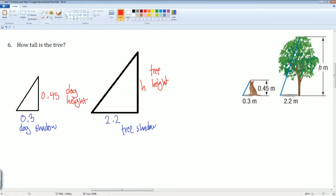The way I'm going to do it is I'm going to do dog height 0.45, I'm going to divide this by the dog shadow 0.3. Set this equal to the height of the tree H, divide this by the tree shadow 2.2. Cross multiply. So 0.45 times 2.2 equals H times 0.3. Plug this into the calculator. 0.45 times 2.2 gets you 0.99 is equal to 0.3H. Divide both sides by 0.3. I get H is equal to 3.3.